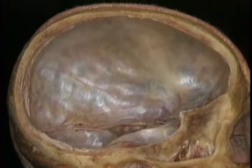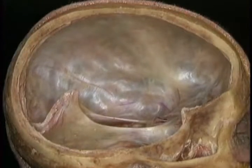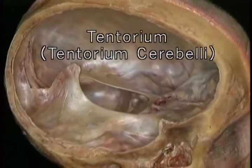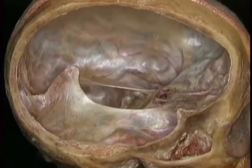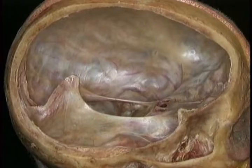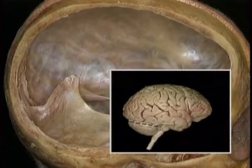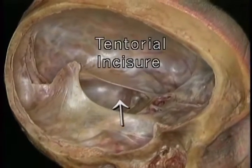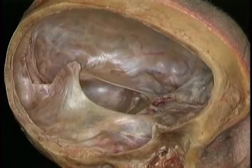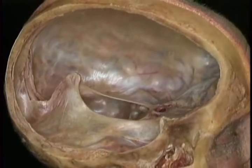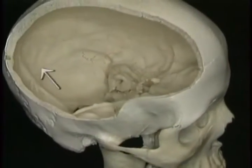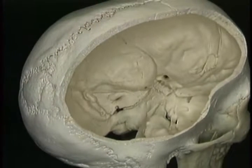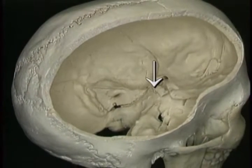They're the falx and the tentorium. Here's the tentorium — its full name is tentorium cerebelli. It separates the posterior cranial fossa from the rest of the cranial cavity, and separates two major parts of the brain: the cerebrum above from the cerebellum below. This opening in the tentorium is called the tentorial incisur, and the brainstem passes through it. The tentorium is attached along this line on the occipital bone and along the edge of the petrous temporal bone, ending at the posterior clinoid process.